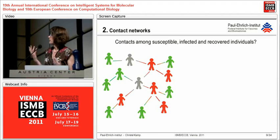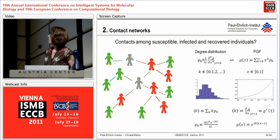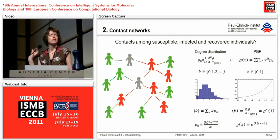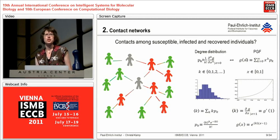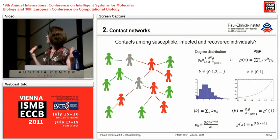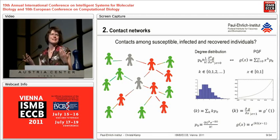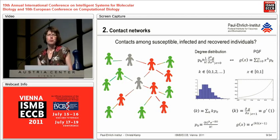Here is just a small part of the network sketch. Basically, you look at the degree distribution p_k, which is the probability for a certain person in the network to have a certain number of contacts. You could equivalently look at the probability generating function — this is just a transformation of the same quantity, and I will go back and forth between the two. While the degree distribution is more intuitive, the probability generating functions are quite handy to use in equations.